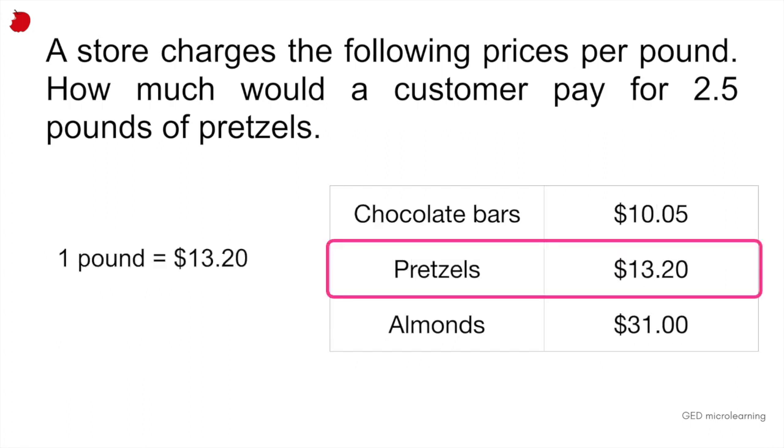So that's the amount that we would pay for one pound. So half of that amount would be half that value, of course. And twice of that amount in the table would be two pounds. It would be the cost for two pounds. So all you have to do is add these two numbers together. That gives you how much you would pay for 2.5 pounds of pretzels, which is $33.